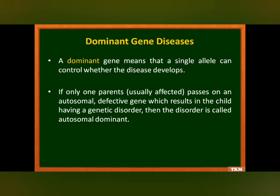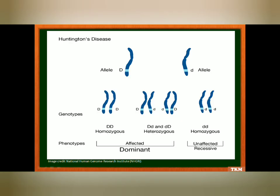A dominant gene means that a single allele can control whether the disease develops. If only one parent passes on an autosomal defective dominant gene resulting in a genetic disorder, the disorder is called autosomal dominant. Using Huntington's disease as an example: if the father contributes a dominant allele and the mother contributes a recessive allele, three out of four children will carry the dominant allele and be affected by the disease, while only one child with two recessive alleles will be unaffected — giving a 75% probability of disease and 25% unaffected.